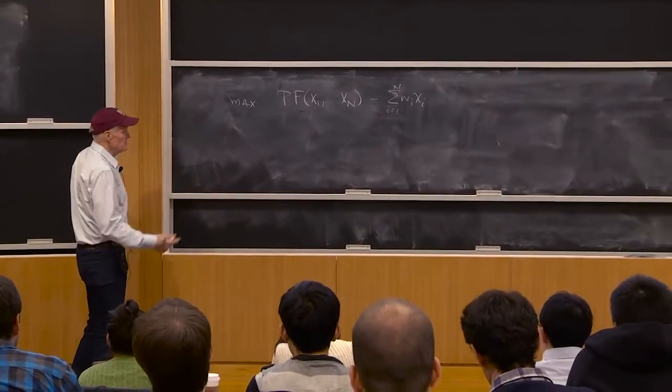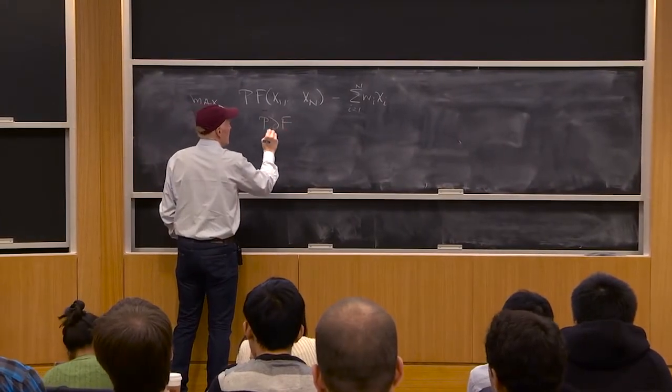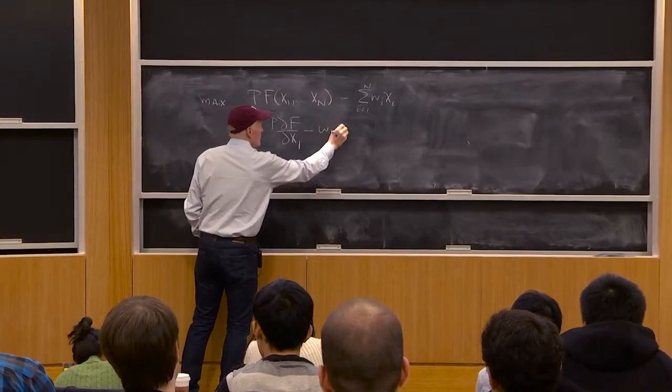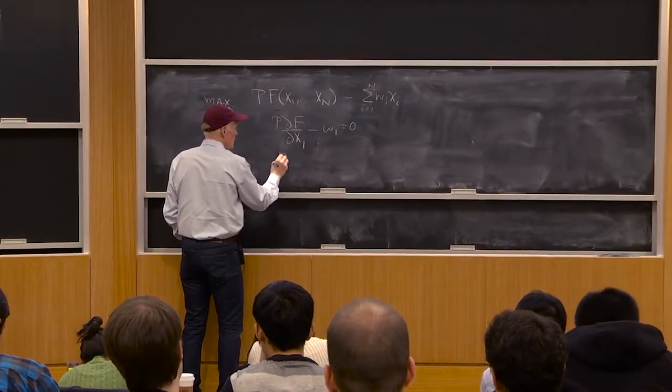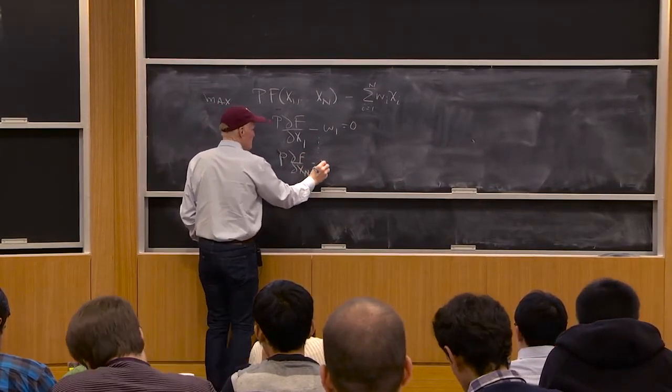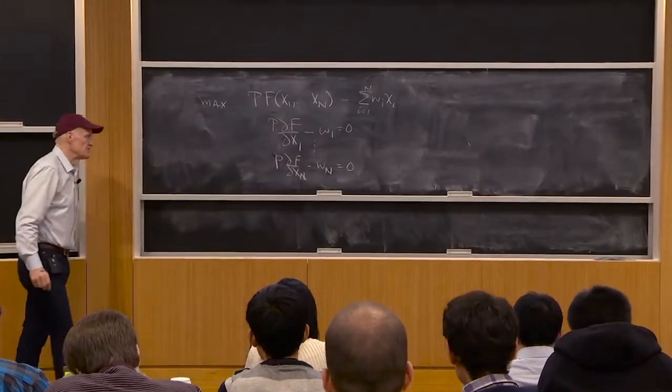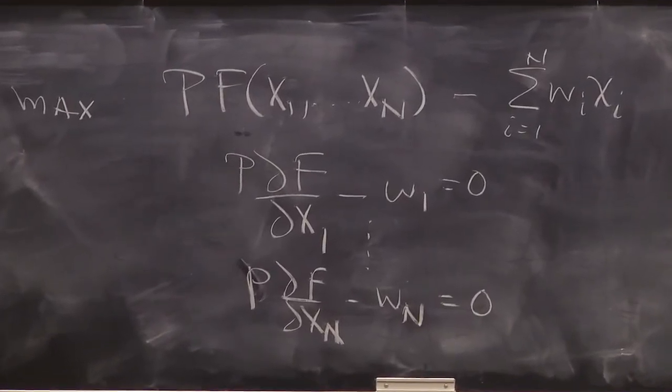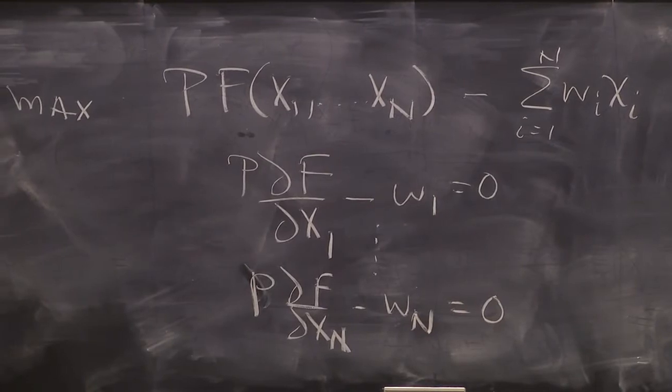Well, the first order conditions are going to be P times partial f, partial x1, minus w1, equals 0, down to P partial f, partial xn, minus wn, equals 0. So there are n first order conditions, corresponding to the maximization with respect to each of the different inputs.